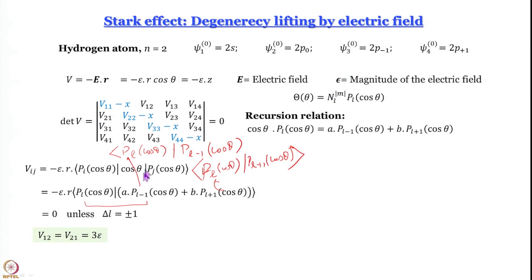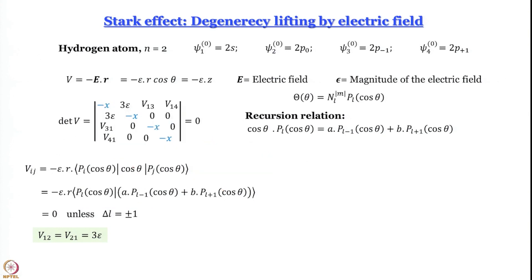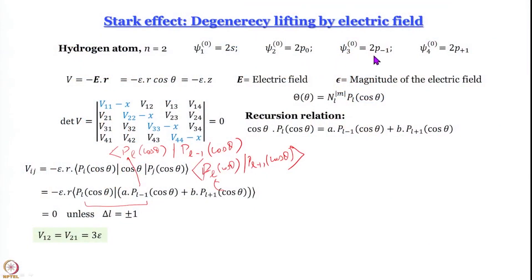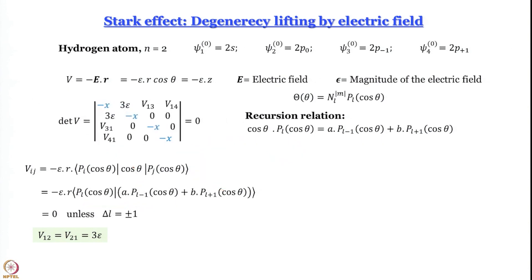I leave it to you to work out and prove that V_12 equals V_21 equals 3·epsilon, where epsilon is the magnitude of the electric field. For V_13 and V_14 and their transposes, we also need to consider the imaginary phi-dependent part of the wave function. Since L_z and minus epsilon·z have common eigenfunctions, by orthogonality these matrix elements also vanish. So V_13, V_14, V_31, V_41 are all equal to zero.